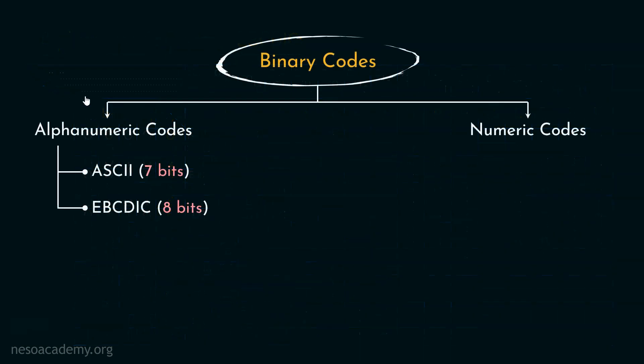Now, since we are done with these alphanumeric codes, let's now come to the numeric codes. The numeric codes are of two types, the weighted numeric codes and the non-weighted numeric codes.